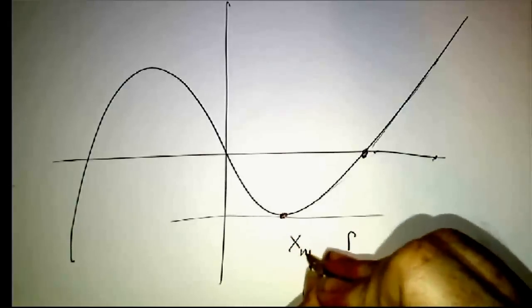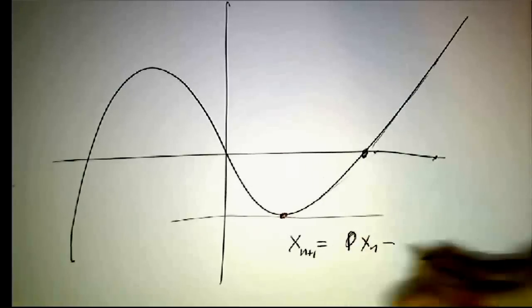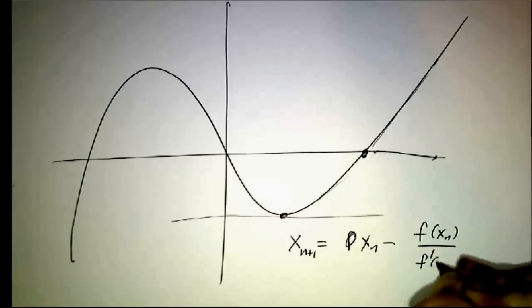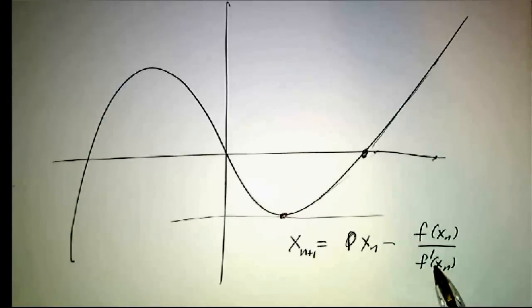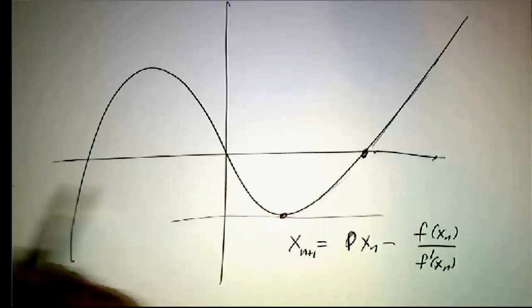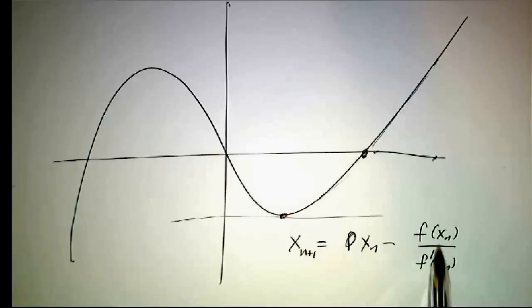Remember, we've got our next point is given by our last point minus f divided by f'. If f' is very small, you could wind up shooting way the heck out to the right, or way the heck out to the left. If you're exactly at a point where the derivative is zero, the formula doesn't even make sense. It's dividing by zero.